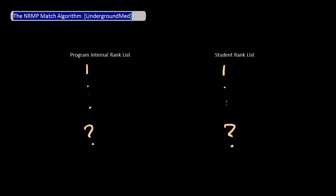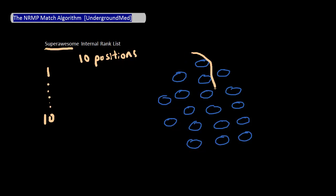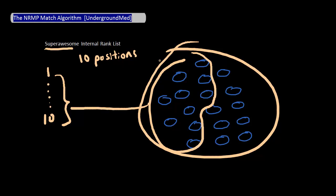For the sake of simplification, let's say that we have a school, Super Awesome, that everyone in the world ranks as their number one. And let's say that this school has ten positions available. In this situation, since everyone equally ranks Super Awesome as number one, the ten students that Super Awesome ranks the highest go there. The main point here is that once a pool of students that would like to go to a certain school is defined, those students in that pool that are ranked highest on that school's internal rank list go there, assuming there are enough positions available.